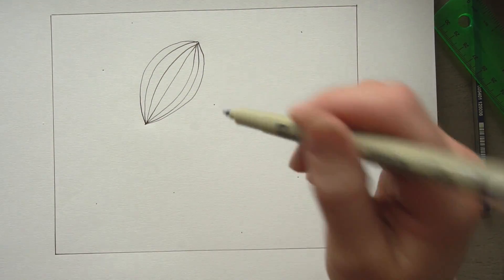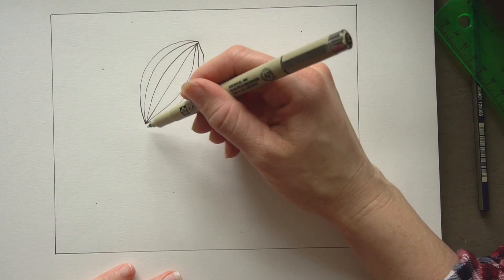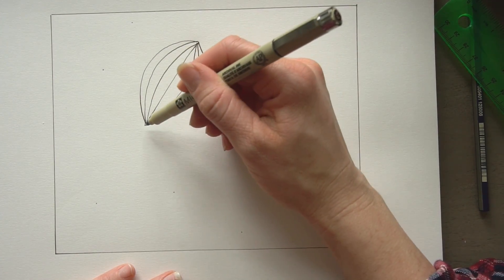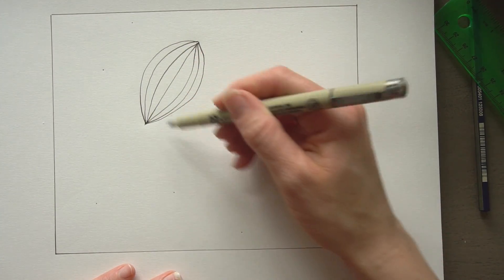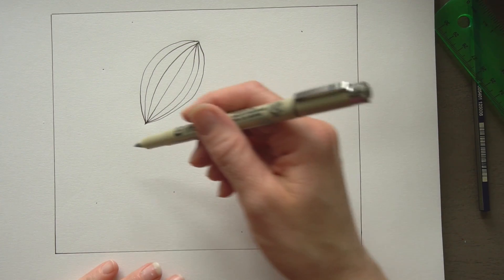We're almost making like this melon shape. You can keep these lines a lot closer together if you want to. Then we're going to take this dot, this line, and bring it somewhere around here.